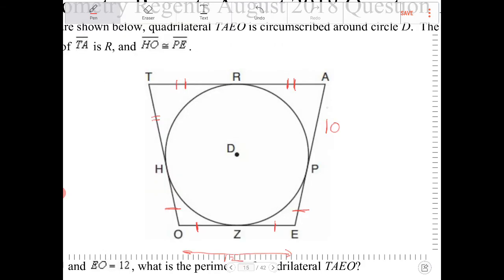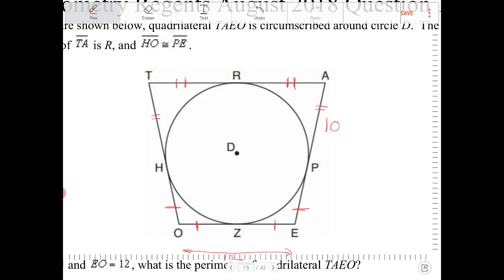RA has two tick marks, so I'm going to give AP two tick marks as well. Looking at this, I can immediately tell a lot of segments here. AP is 10, so then RA is also 10, TR is also 10, TH is also 10.